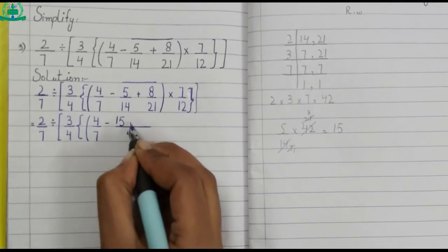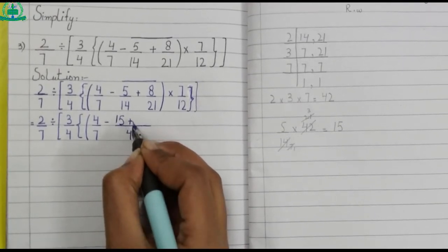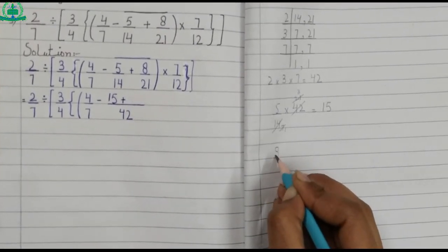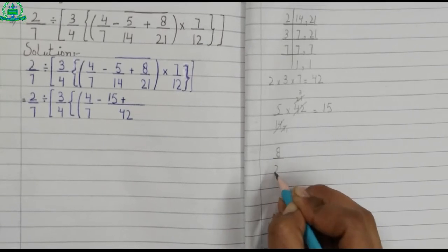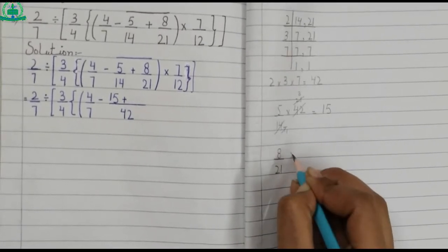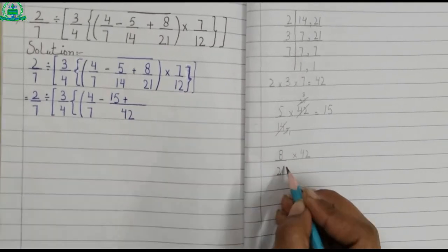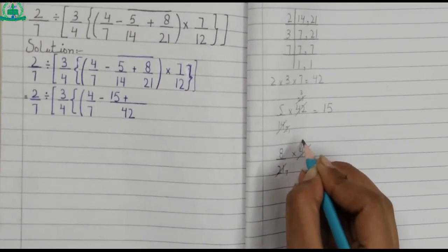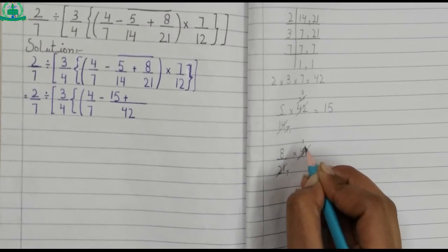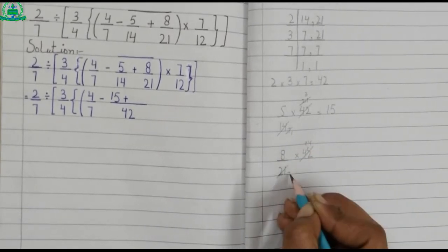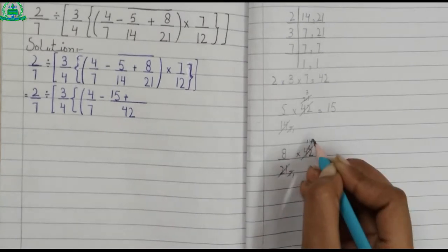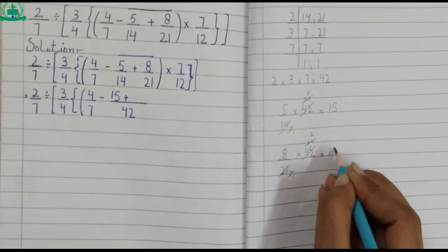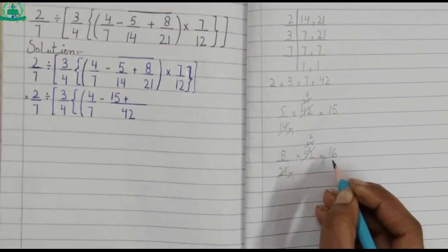15 plus — for the second fraction we multiply it with the answer of LCM: 8 upon 21 multiply by 42. Two three sevens of 21, three ones are three, remaining one makes it 12, three fours are 12, seven seven to 14. Eight multiply by two makes 16, so we write 16 in the numerator.